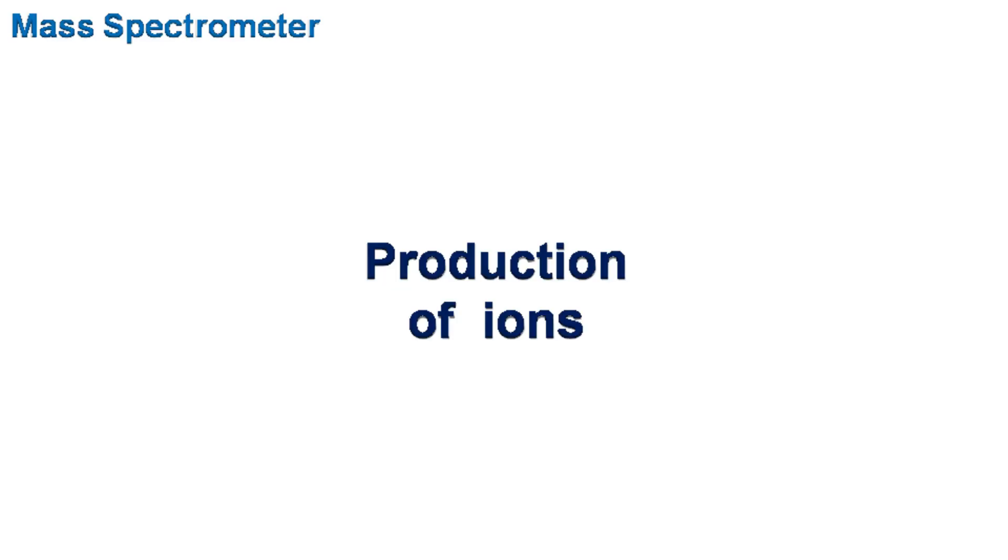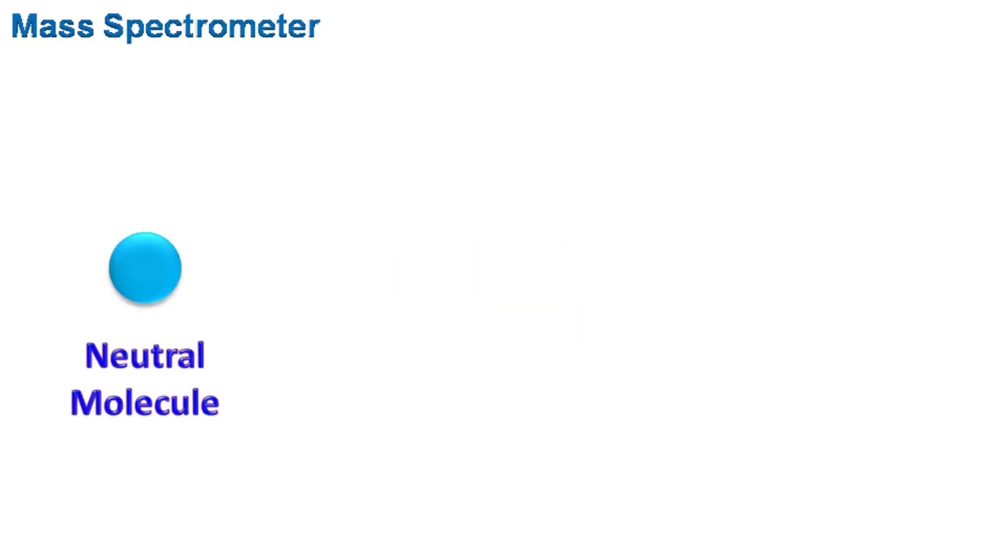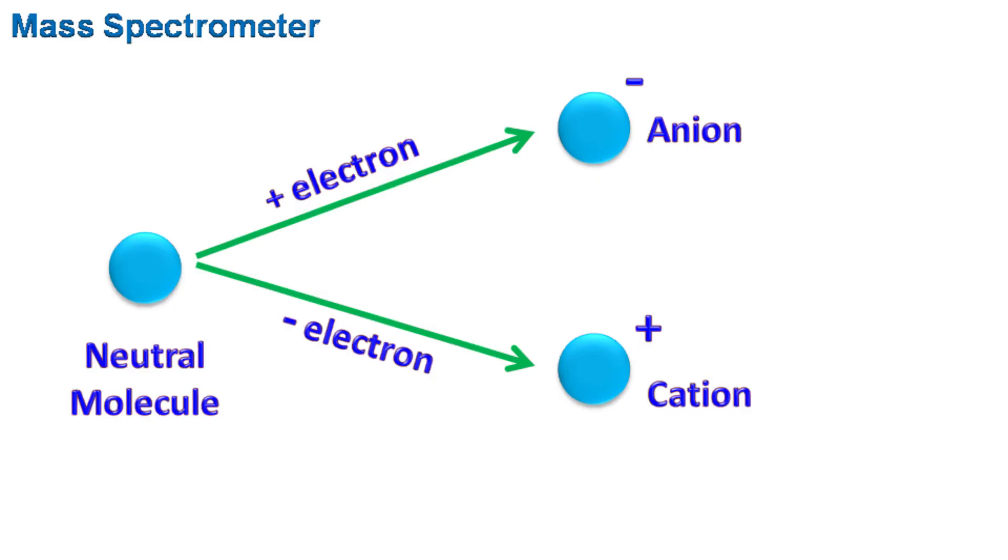Let's talk about production of ions in the gaseous phase. A neutral molecule can be converted into an ion either by adding an electron or by removing an electron. The addition of electron will generate negatively charged ion known as anion, while the removal of electron will generate positively charged ion known as cation. Any of the ions can be used for detection in mass spectrometer.